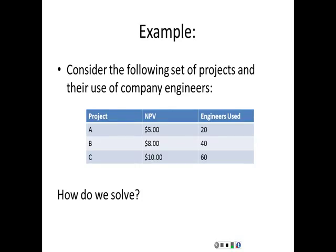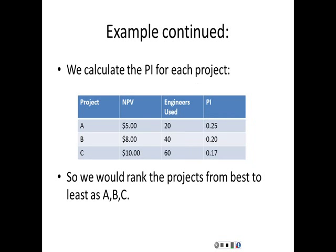Let's look at the following example. We have three possible projects with potential NPVs calculated and the number of engineers used for each project. Suppose we can't do all the projects because we don't have 120 engineers. We calculate the PI for each project — just the NPV divided by engineers used. For project A, the profitability index is the NPV of 5 divided by the 20 engineers used, which works out to 0.25. In other words, the project creates $0.25 of NPV per engineer employed.